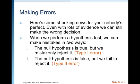Making errors. Here's some shocking news: nobody's perfect. Even with lots of evidence, we can still make the wrong decision. When we perform a hypothesis test, we can make mistakes in two ways — and this assumes we've done the process absolutely correctly. Either the null hypothesis is true but we mistakenly reject it, or the null hypothesis is false but we fail to reject it.